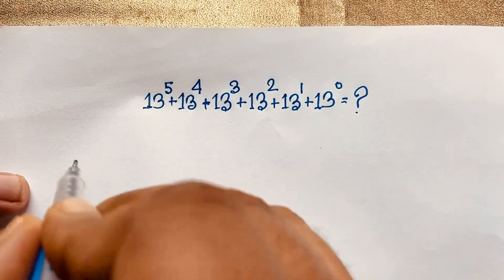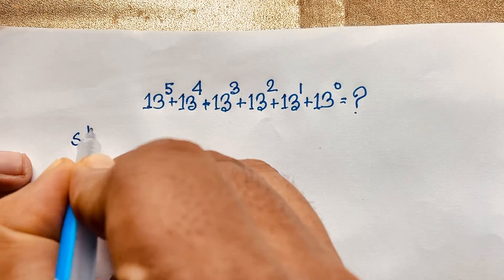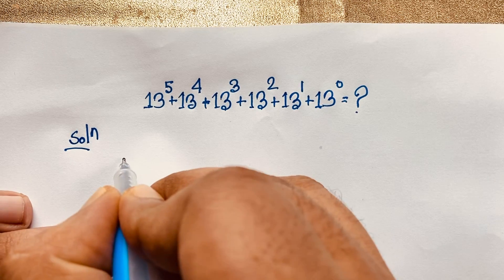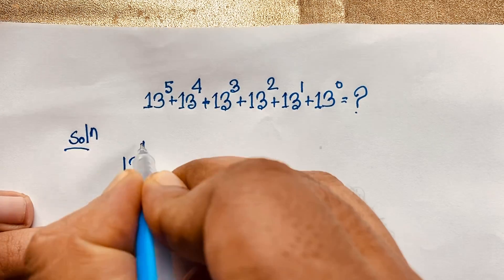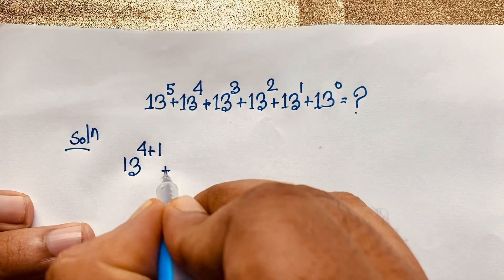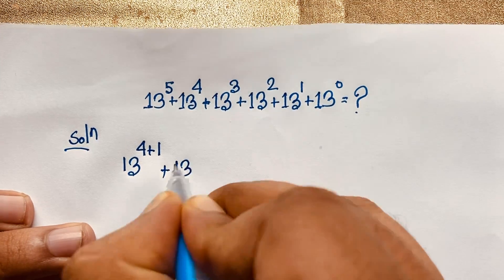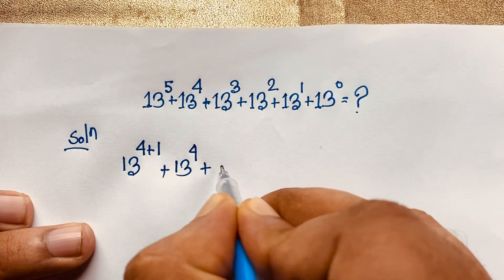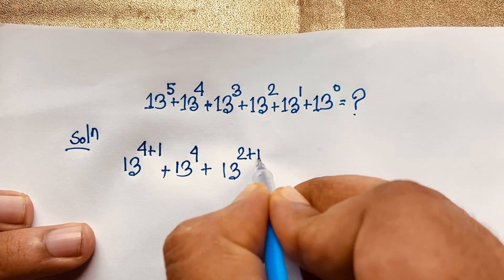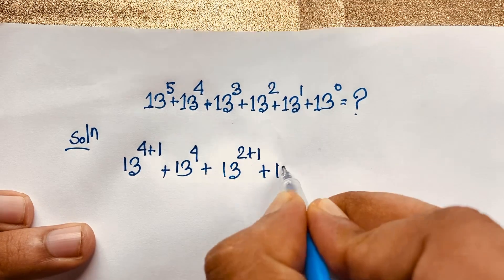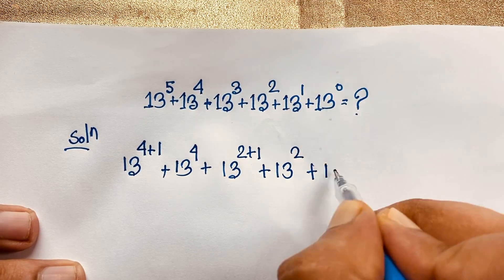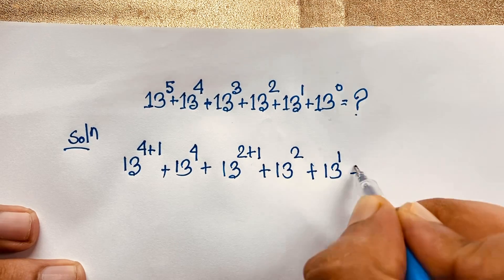I solved this question using a method or math solution. Our question starts with 13 power 5. You can see this is 13 power 5, which is 13 power 4 plus 1. Because of that, this is 13 power 4. Now this is 13 power 2 plus 1, and here is 13 power 2, and this is 13 power 1, and this is 13 power 0.